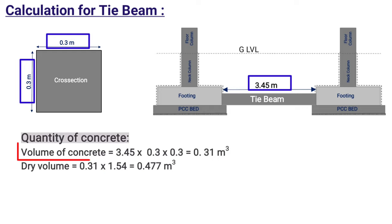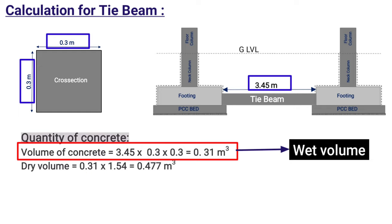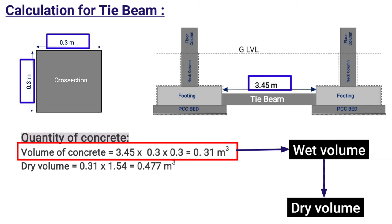So volume of concrete will be equal to 0.31 meter cube. This volume is the wet volume of concrete. So we need to convert it to dry volume to know the exact quantities required.